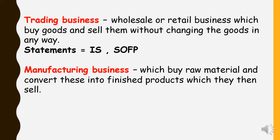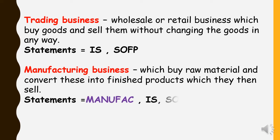Manufacturing businesses have the same income statement and statement of financial position as trading businesses, but they also have one special account called the manufacturing account. This manufacturing account is only for manufacturing businesses.